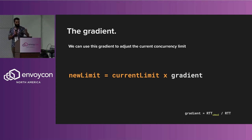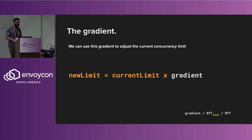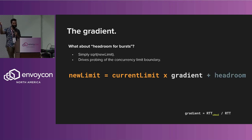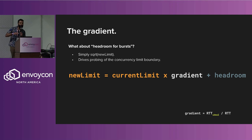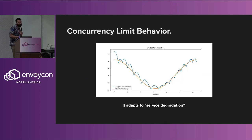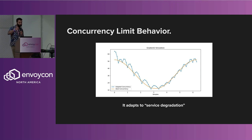How are we calculating this concurrency limit? We adjust it by multiplying it by the gradient. For headroom — if I want to burst — we add a headroom value: make it the square root of the new limit. This is nice because now I just keep probing upward, letting more stuff in until something goes wrong, then clamping down aggressively. So: I get latency, I cut it down, I probe again, I get latency, I cut it down.